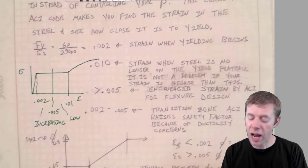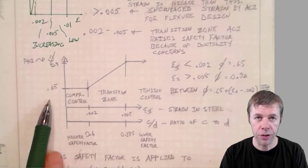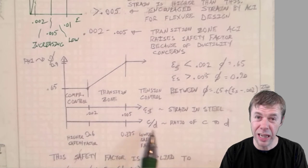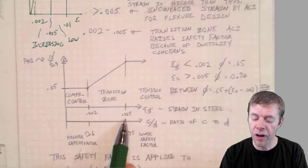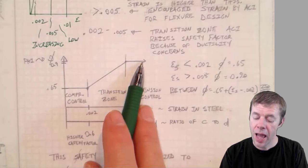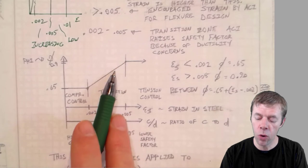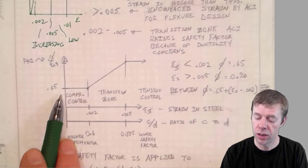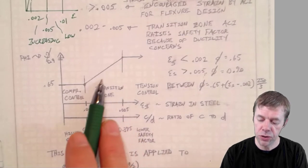And this is explained graphically here. So here's the fee factor or your safety factor. Here is the strain in your steel. Another way to think of this is the ratio of your C to your D. And if your strain in your steel is at least 0.005 or higher, what's your safety factor? It's high. That's good. As you're in this transition zone between 0.002 and 0.005, your safety factor gets lower and lower, and because it's on the capacity side, then this is an increase in safety factor. So this is higher safety factor. This is lower safety factor. And this is the transition zone in between.